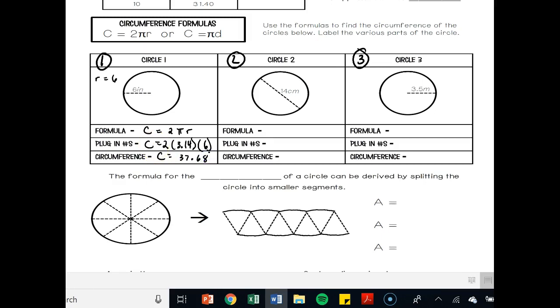Circle number two. If I've got my formula, notice this time I have a diameter. It goes all the way through the circle. So that's 14. So my formula is c is equal to just pi d. Much easier formula. So c is equal to what's pi? 3.14 times what's my diameter? 14. In this case, my circumference or the distance around my circle is 43.96, and I forgot to put centimeters.